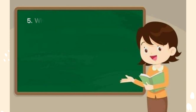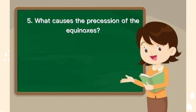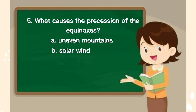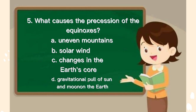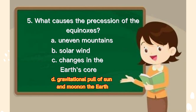Number 5. What causes the precession of the equinoxes? A. Uneven mountains, B. Solar wind, C. Changes in the earth's core, D. The gravitational pull of the sun and the moon on the earth. The answer is D.